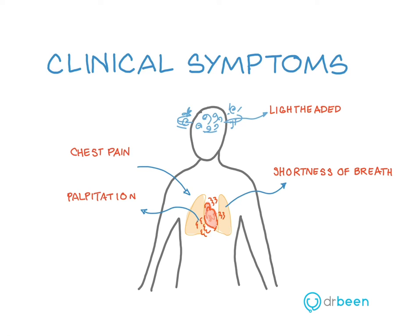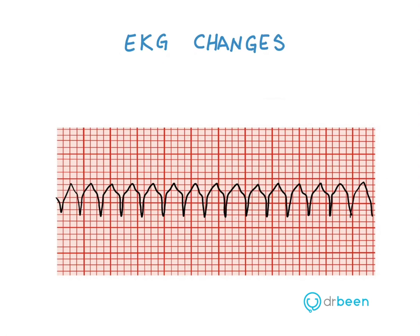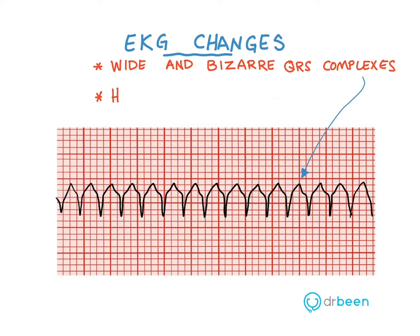Palpitations, which can turn into V-fib, which can be deadly. You may also see cannon A waves in the neck, which are secondary to AV dissociation, and hear an S1 sound that has various intensities. EKG findings for VTAC are generally easy to spot. You will see wide and bizarre QRS complexes and tachycardia with a heart rate of greater than 100 beats per minute.